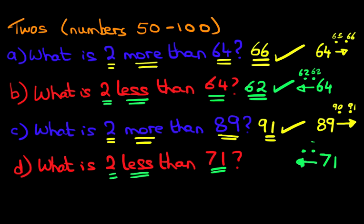So we got 71, 70, 69. And that is our answer: 69. So that is how we do more than and less than of 2's with numbers from 50 to 100.